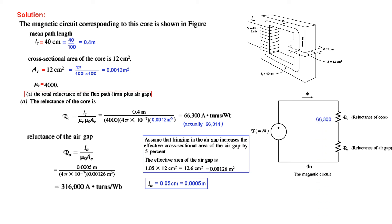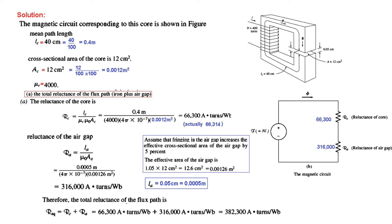We write both the values and, since the question asks for total reluctance, we simply add the two. The total reluctance is 382,300 ampere-turns per Weber. This is the answer to the first part of the question.